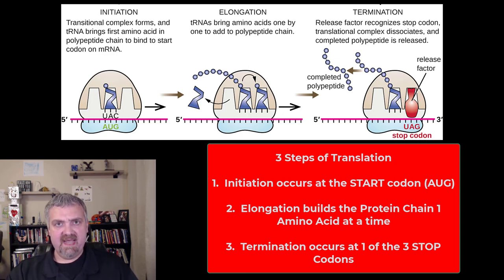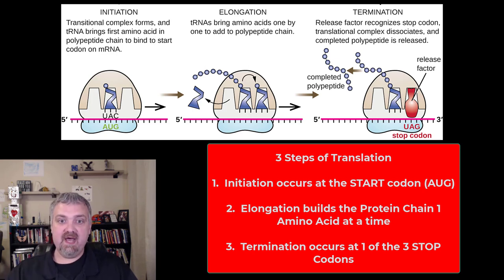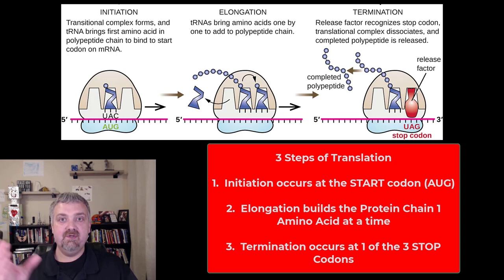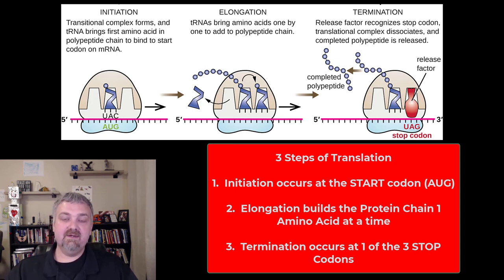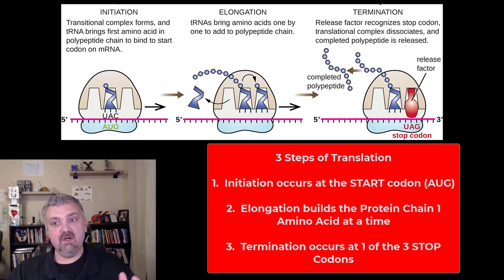Elongation: the messenger RNA is read three letters at a time, and amino acids are brought in. Notice that the protein or polypeptide chain is being lengthened. Every time a new transfer RNA comes on, reads the next three letters, it leaves an amino acid behind, which is bound together by a peptide bond. That protein is going to continue to get longer and longer until termination.